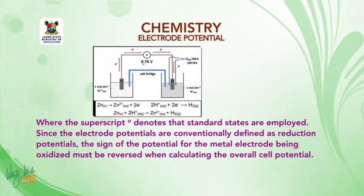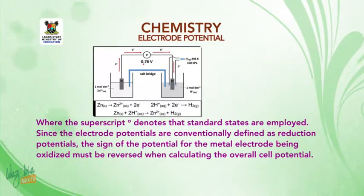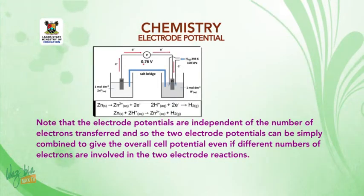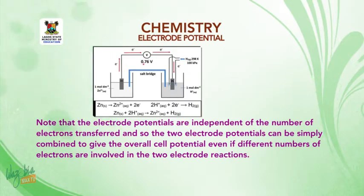Since electropotentials are conventionally defined as reduction potentials, the sign of the potential for the metal electrode being oxidized must be reversed when calculating the overall cell potential. Note that electropotentials are independent of the number of electron transfers, so the two electropotentials can simply be combined to give the overall cell potential even if different numbers of electrons are involved in the two reactions.